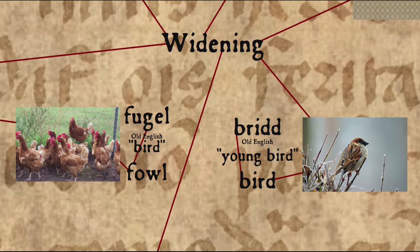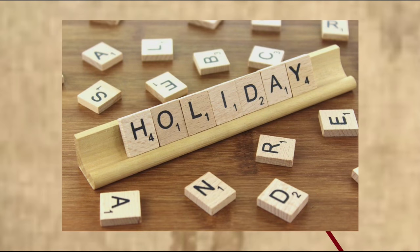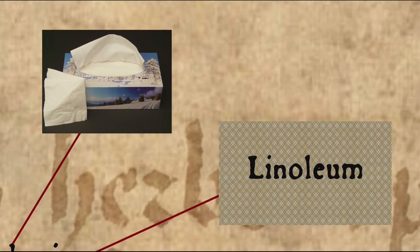The opposite process, widening or generalization, broadens or extends the sense of a word, as in 'bird,' which as Old English 'brid' meant specifically young bird, with the word 'fügel' — fowl in modern English — being the more general word for bird. Whereas 'bird' widened its meaning to refer to any bird, 'fowl' narrowed its meaning to refer specifically to barnyard birds such as chickens, ducks, and geese. A similar example is 'holiday,' which originally meant a holy day, before its meaning extended to any time off. A special case of widening is genericization, in which a trademark name becomes a general term for the category, such as Kleenex, or, as covered in a previous video, linoleum.